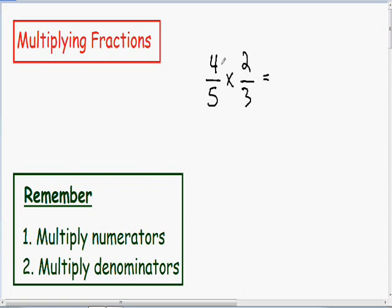Following our steps we just need to multiply our numerators. In our numerator we have a 4 and a 2 so I'm going to multiply our 4 and 2 together in our numerator. In our denominators we have a 5 and a 3 so in our denominator I'm going to multiply the 5 and the 3 together.